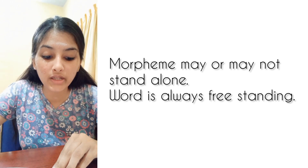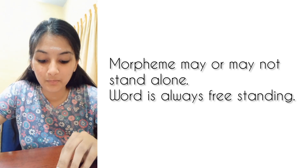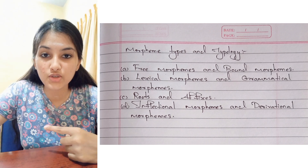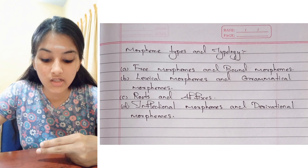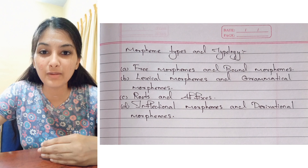Let us move on to the types and typology of morphemes. Before that, we need to understand the difference between morphemes and words. The principal difference is that a morpheme may or may not stand alone, whereas a word is always freestanding. Morphemes can be classified into free morphemes and bound morphemes, lexical morphemes and grammatical morphemes, roots and affixes, and inflectional morphemes and derivational morphemes.